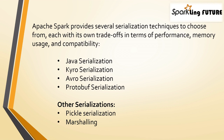Out of these, Kryo serialization is often the popular choice for Spark applications due to its speed and compactness. It's especially useful when dealing with complex data structures and high-performance requirements. However, other serialization techniques like Avro and Protobuf have their own strengths and might be suitable for scenarios where schema evolution is critical. By default, if nothing is specified, Java serialization is used.